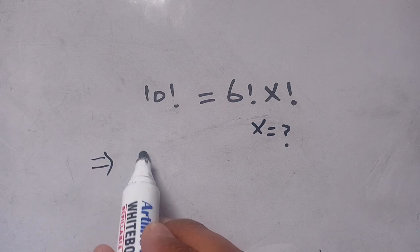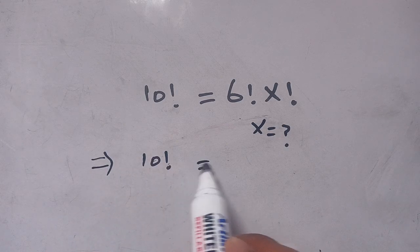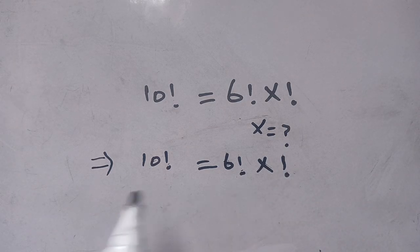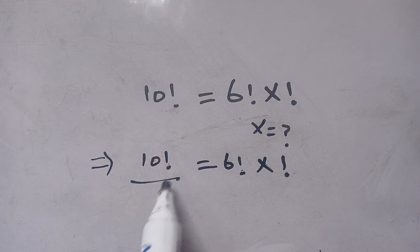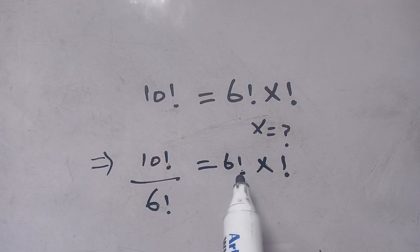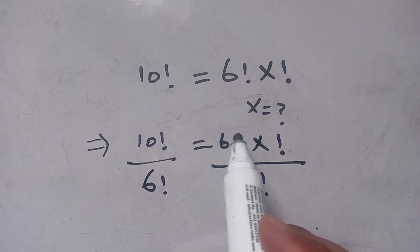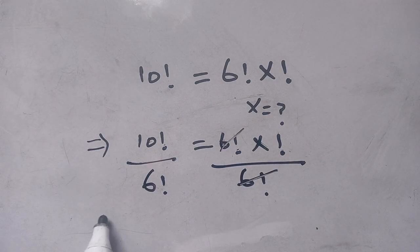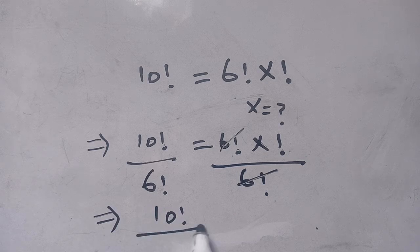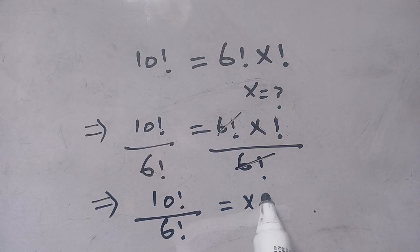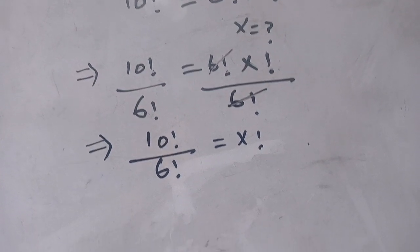We can write it as 10! = 6! × x!. Now, dividing both sides by 6!, we get 10! divided by 6! equals 6! times x! divided by 6!. We can cancel out the 6! on the right side, which gives us 10! divided by 6! is equal to x!.